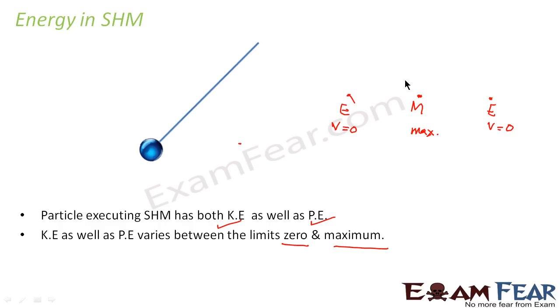Kinetic energy as well as potential energy varies between the limits zero and maximum. How does it vary? Just now I told you that at the mean position, velocity is maximum. Now kinetic energy is what? It is nothing but half mv square. So kinetic energy is dependent on velocity. So if velocity is maximum at mean position, that means kinetic energy is also maximum at mean position.